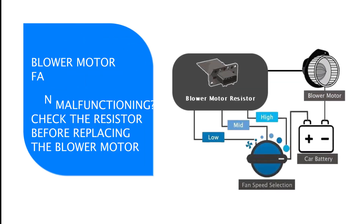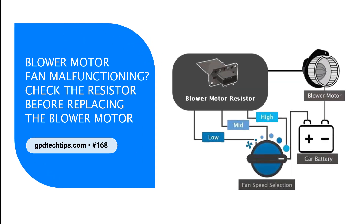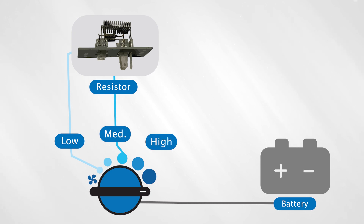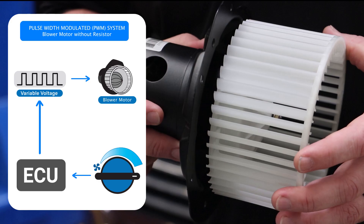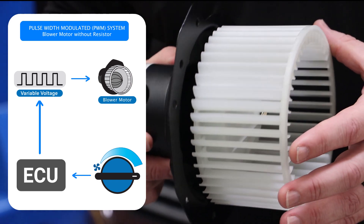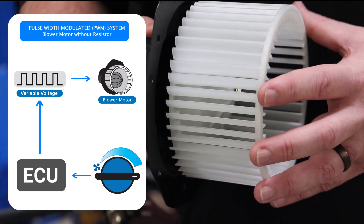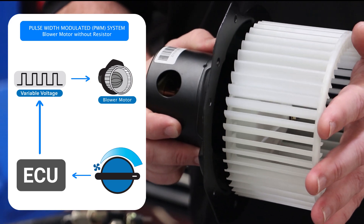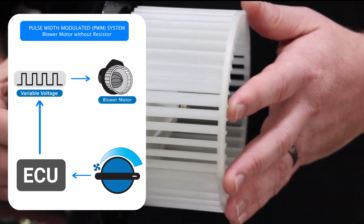As described in GPD Tech Tip number 168, most blower motors require a resistor or module that varies electrical output to the blower motor based on selected fan speed. Today, a growing number of late model systems feature a blower motor that operates on pulse width modulation (PWM) rather than a voltage, and does not require a resistor or module.